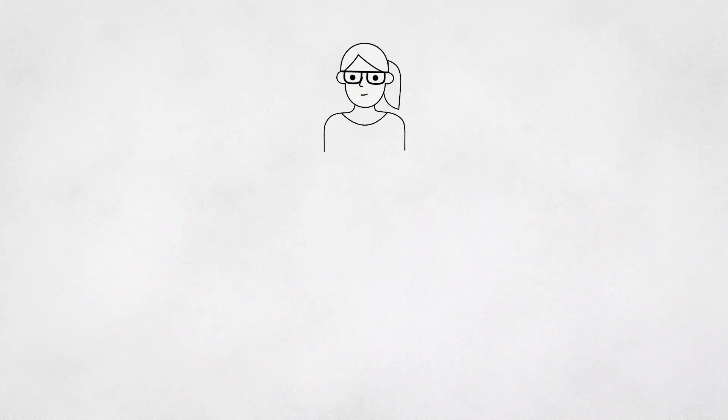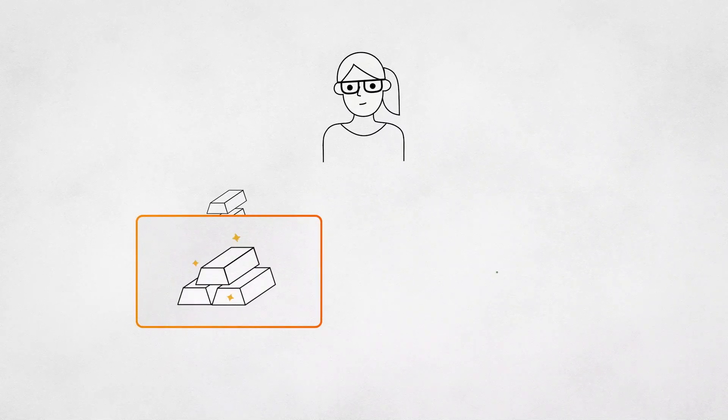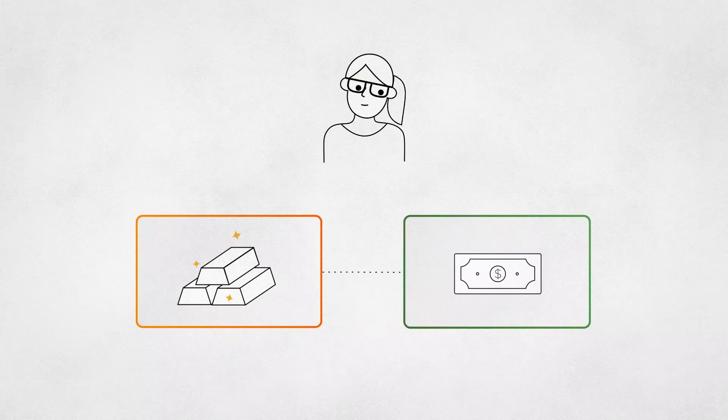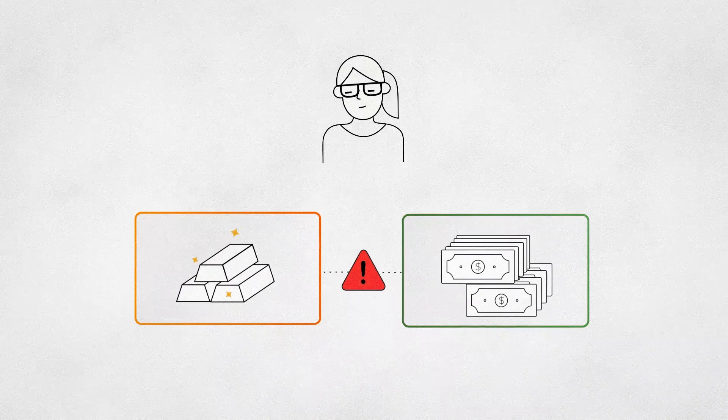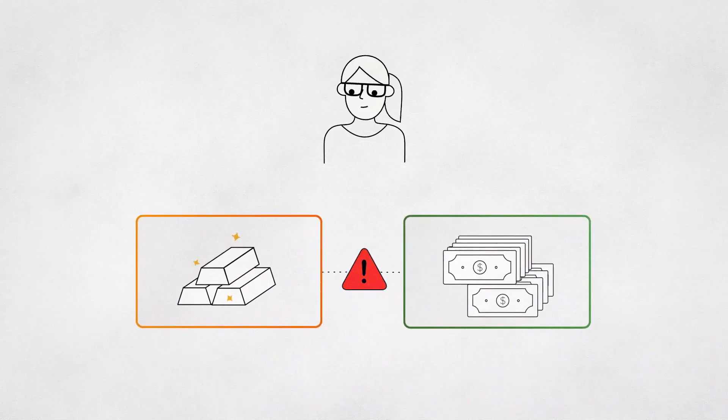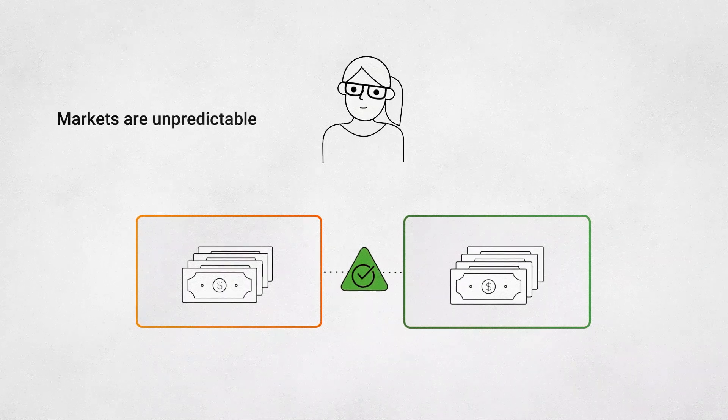Now, let's imagine instead the situation is reversed and Alice uses 100 ounces of gold to produce a synthetic dollar. Just as before, there is no way to guarantee that one asset will always over-collateralize the other, unless the two assets are exactly the same, because markets are unpredictable.